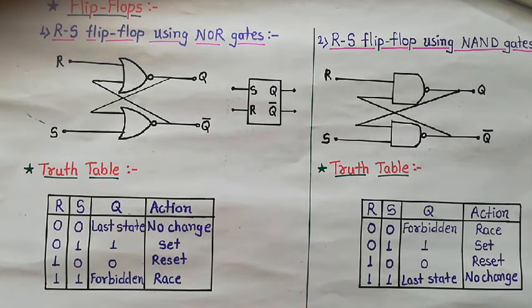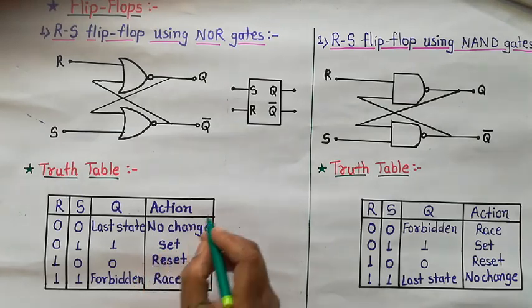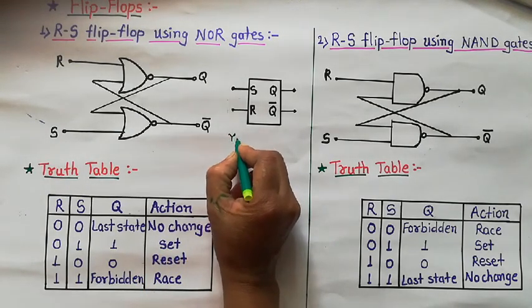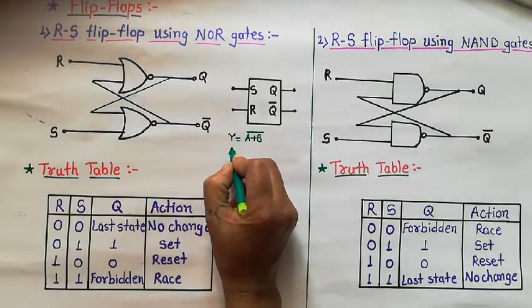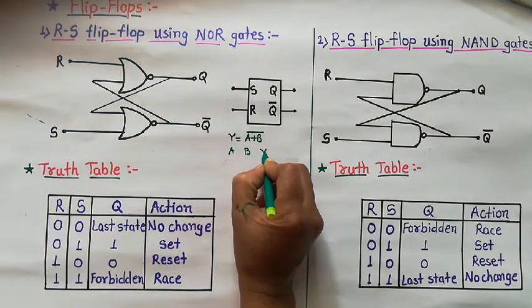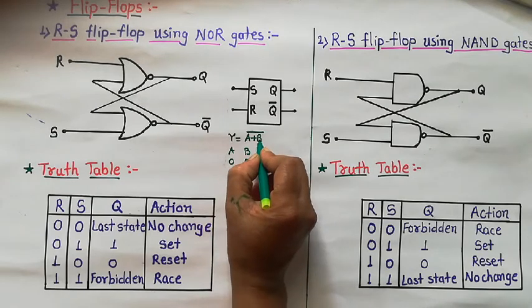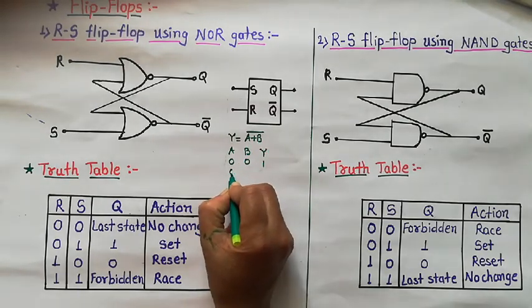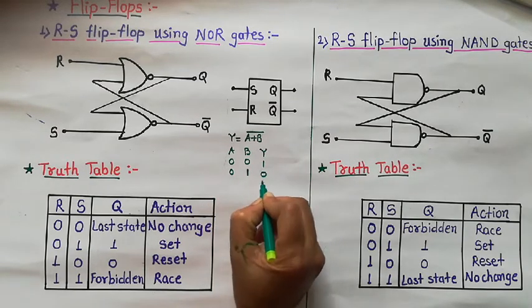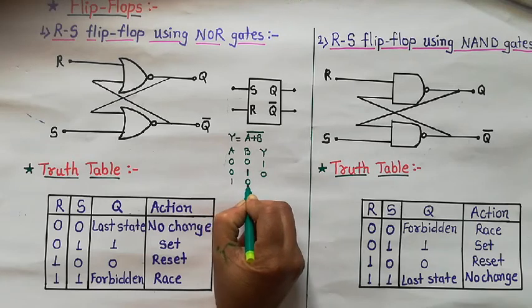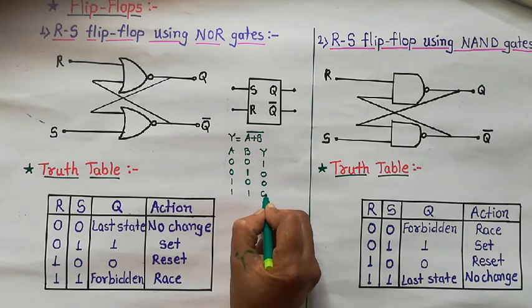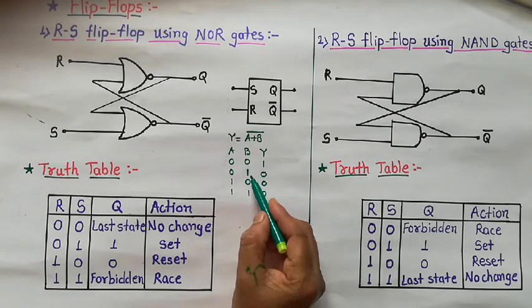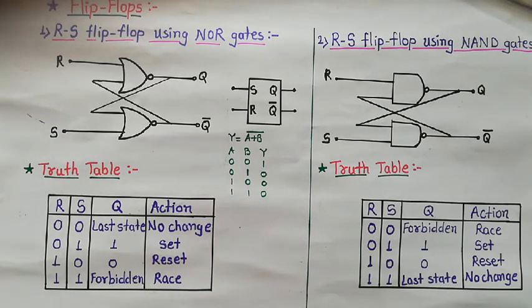NOR gate was studied in our logic gate chapter. The logical equation of NOR gate is y = (a + b) bar. From the truth table of NOR gate, if any one input of the NOR gate is high, its output is low.